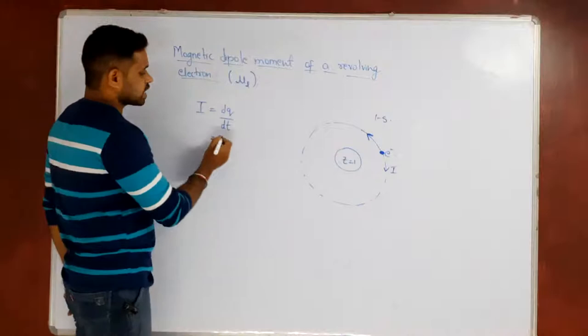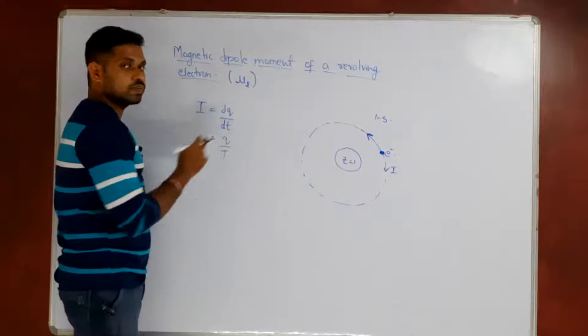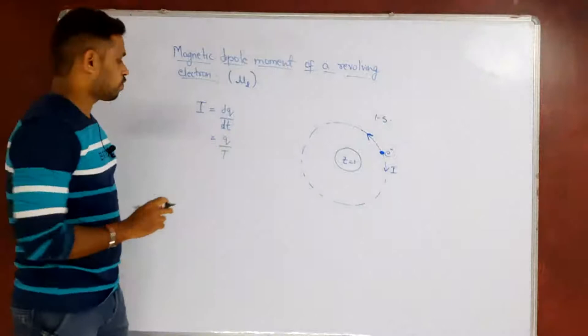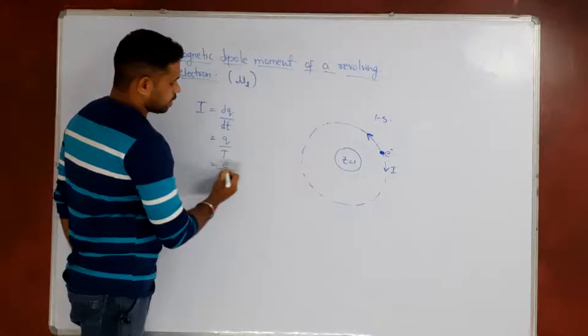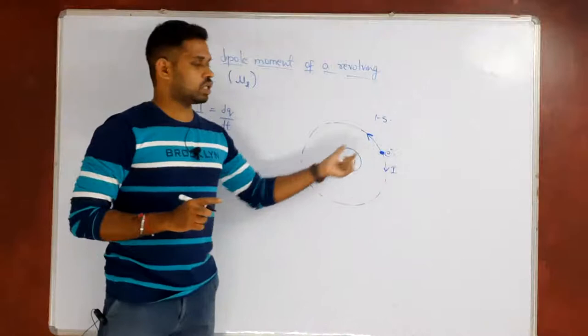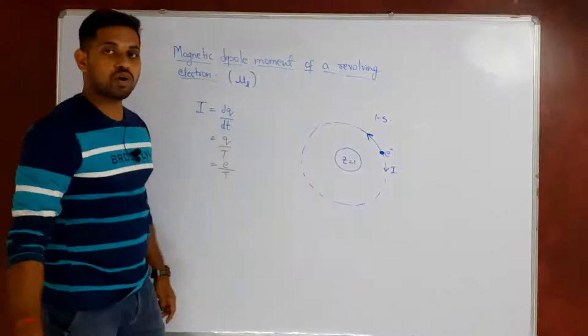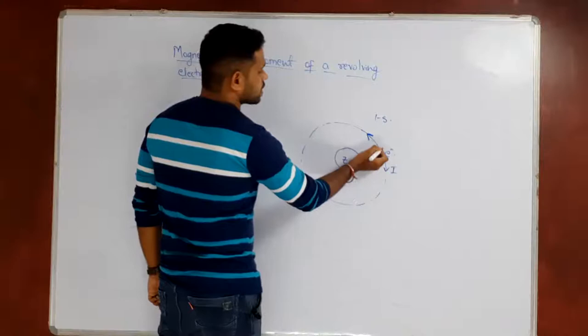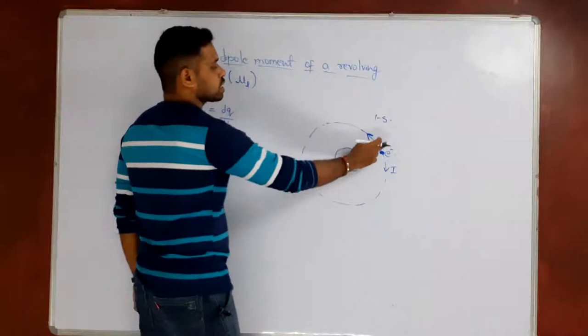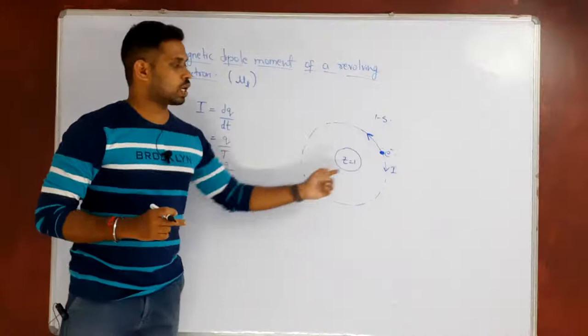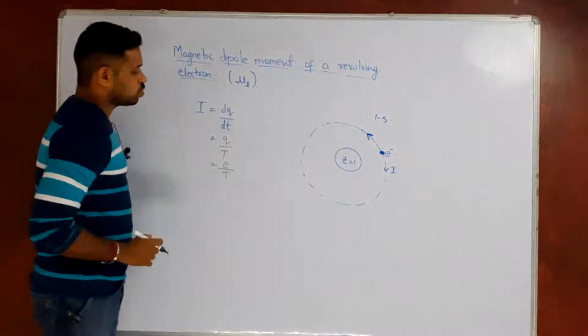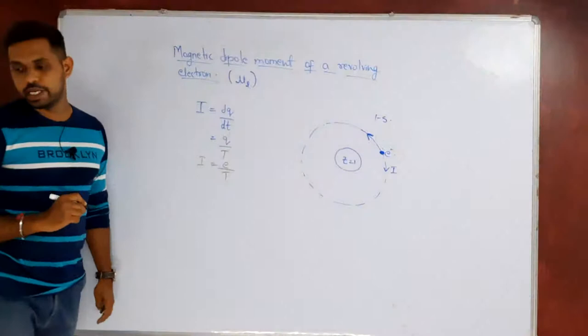This is an instantaneous current. But if you talk about average current, it is just q by t, where q is the charge and t is the time in which the amount of charge has flown. So what is q here? Here q is e, and e is the charge on an electron. And t is the time period of the rotation of the charge — the time required to come back to the same position. That is called as time period. So I is equals to e by t. Let this be equation number 1.